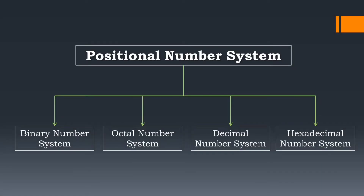Now let's talk about the different types of positional number system. For any number system, there should be at least 2 digits, which means the minimum base for a number system is 2, and hence a number system with base 1 is not possible. There are mainly 4 types of positional number system which are commonly used: binary number system, octal number system, decimal number system and hexadecimal number system.